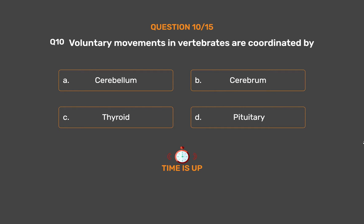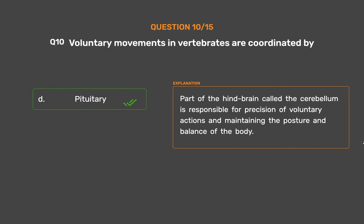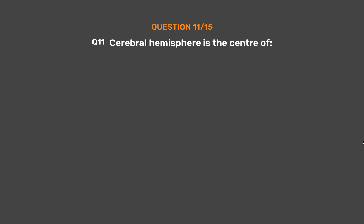The correct answer is Option D, Pituitary. The part of the hindbrain called the cerebellum is responsible for precision of voluntary actions and maintaining the posture and balance of the body.